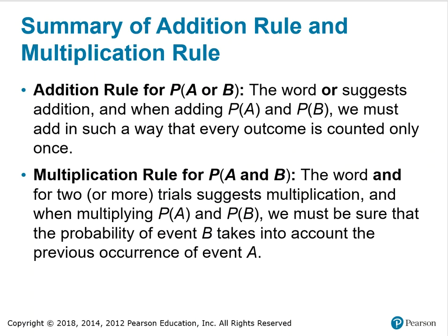To summarize: the addition rule is P(A or B) — the word 'or' suggests addition, and when adding P(A) and P(B) we must add in such a way that every outcome is counted only once. The multiplication rule is for P(A and B) — the word 'and' suggests multiplication, and when multiplying P(A) and P(B) we must be sure that the probability of event B takes into account the previous occurrence of event A.